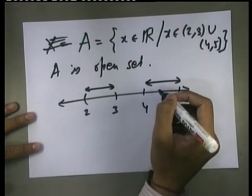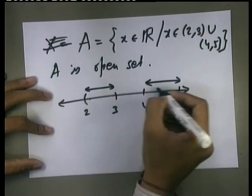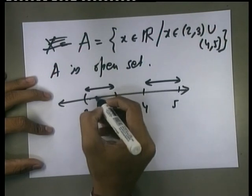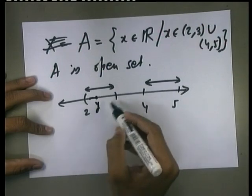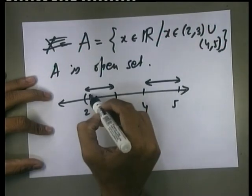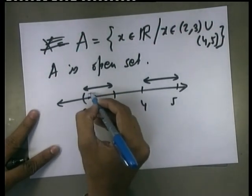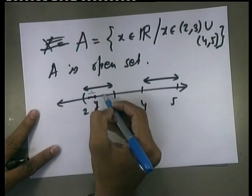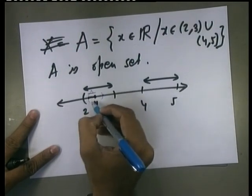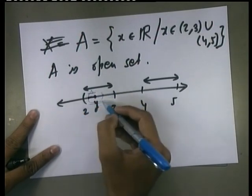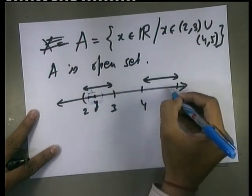As per the definition of an open set, if we take any point inside any of these intervals, we can always find some small radius. If I am taking this as my y, then I can always think of some radius R such that the ball centered at y with radius R is always inside the set A.